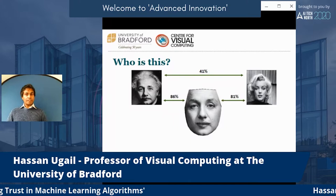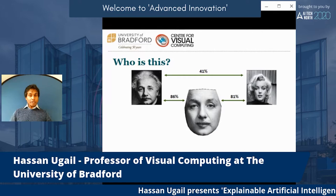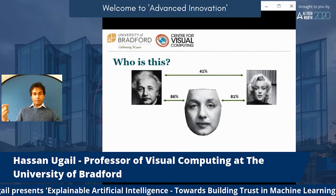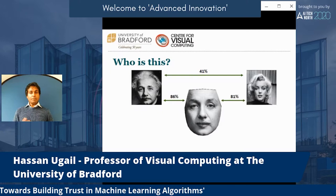It's 81% Monroe and 86% Einstein, but obviously between Einstein and Monroe themselves there's only 41% similarity. So a face recognition system will fail if you compare Monroe and Einstein directly. But if you put this blended face in, it will say this is Einstein as well as Monroe.